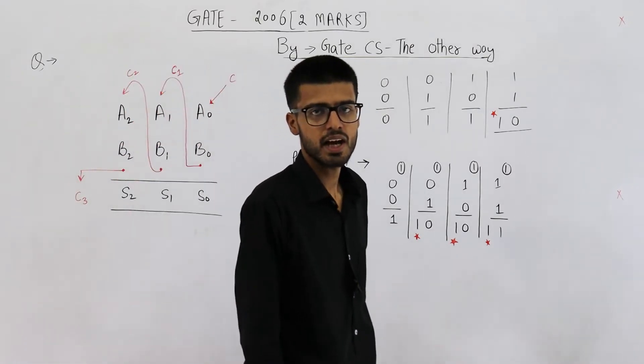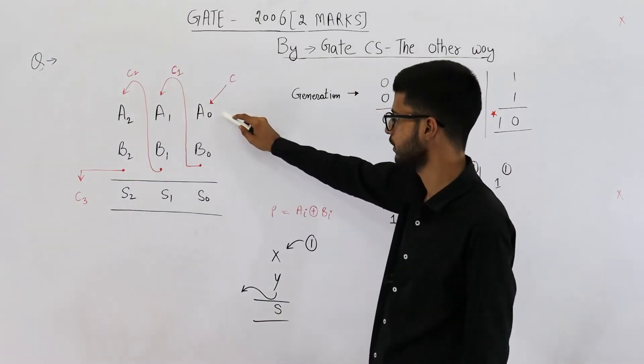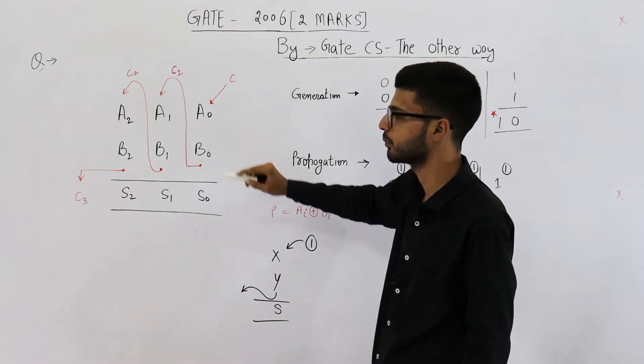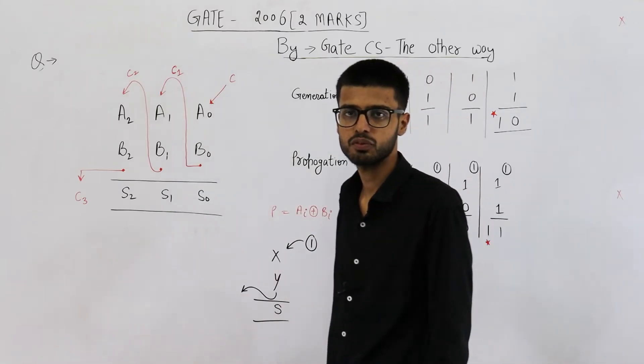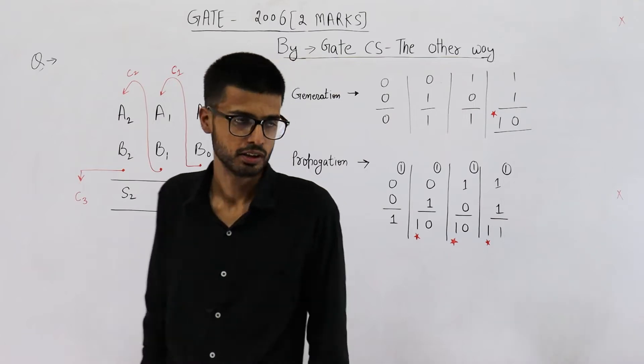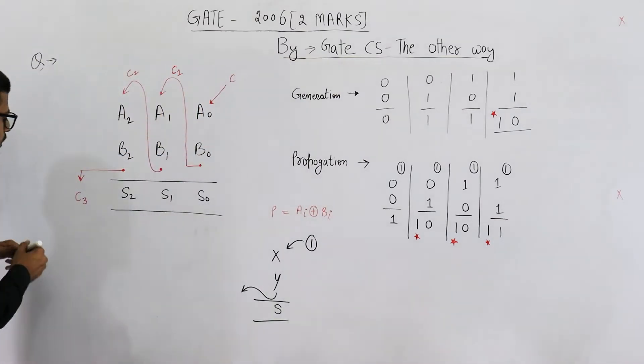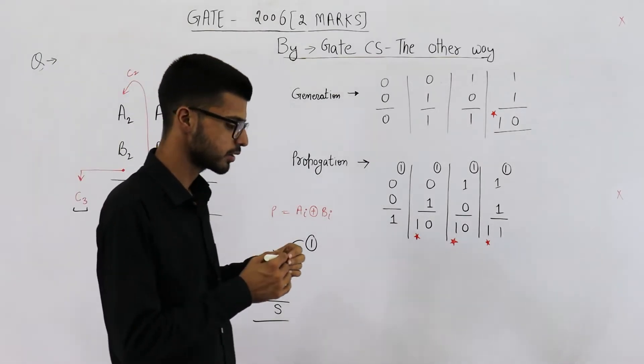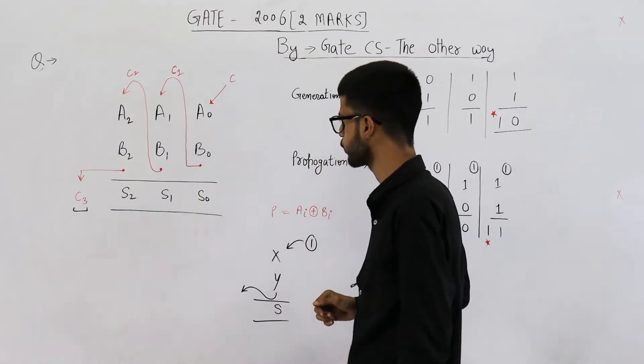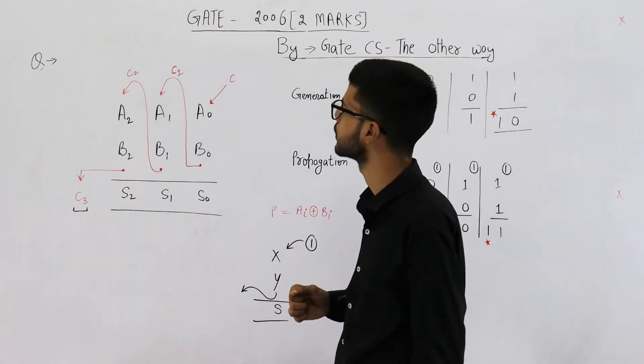They are saying whenever we add any two 3-bit numbers, for example A and B, what will be the expression for carry generate function? That means you need to determine the expression for C3. Sometimes it's called Cout. Let us try to write the expression for C3, but before that, let's discuss some basics.